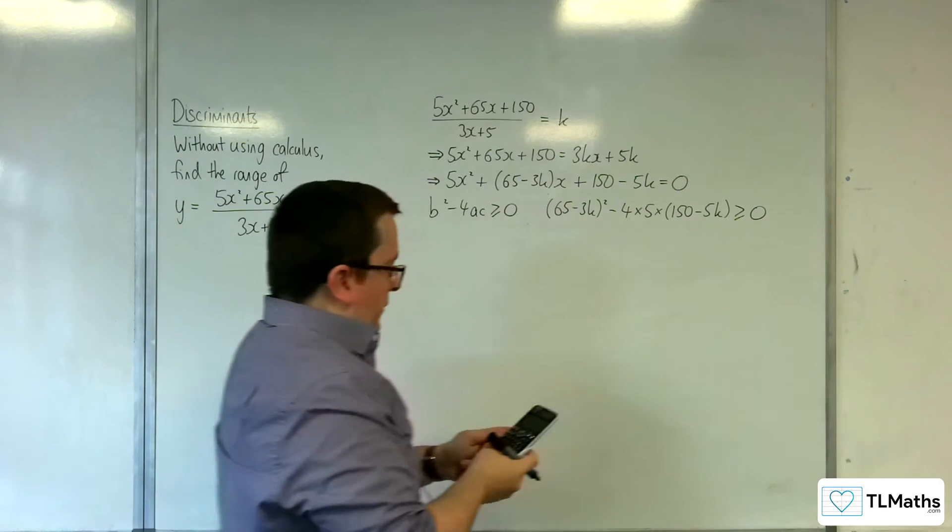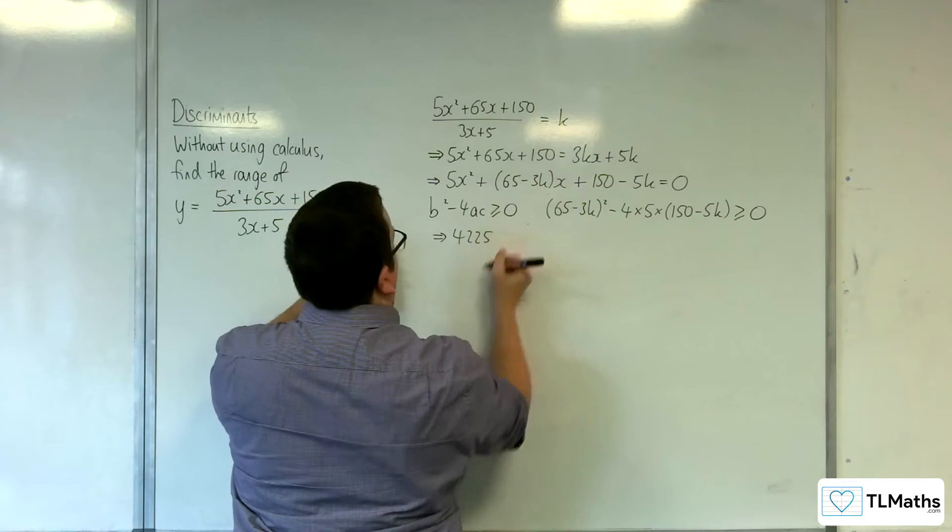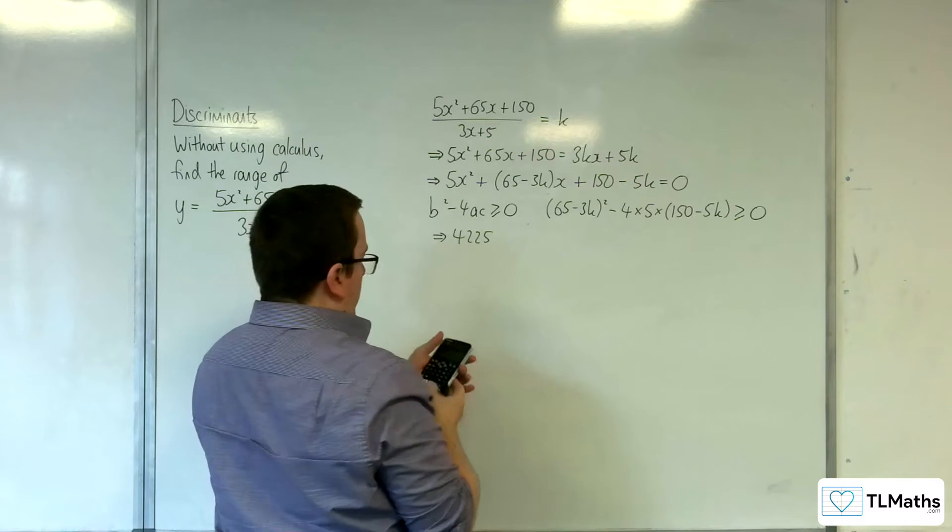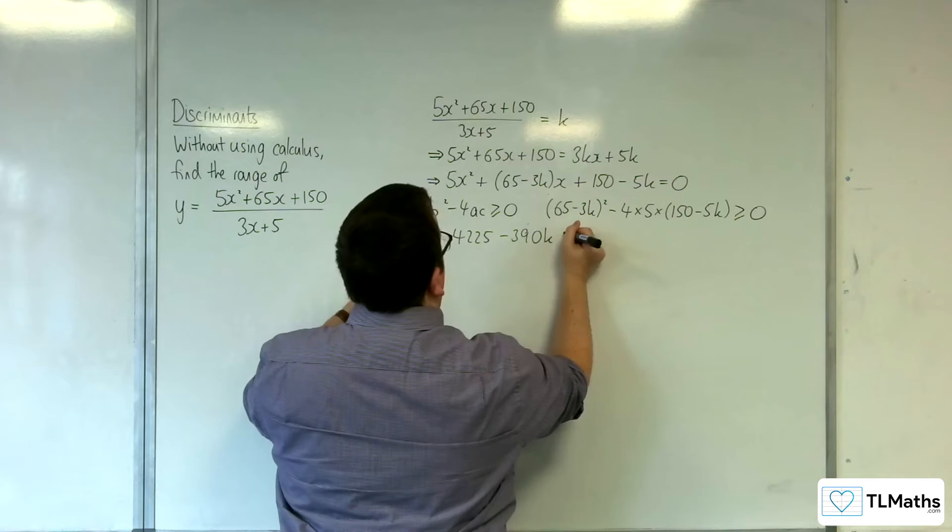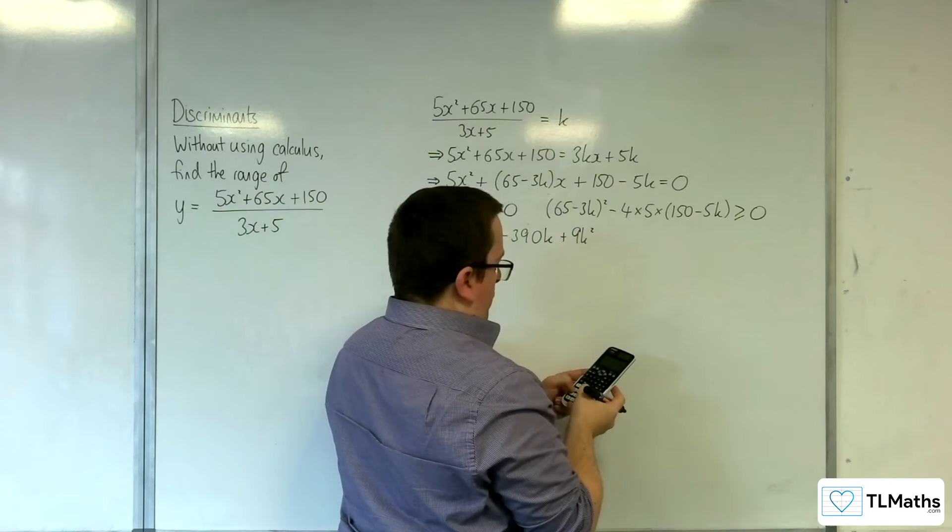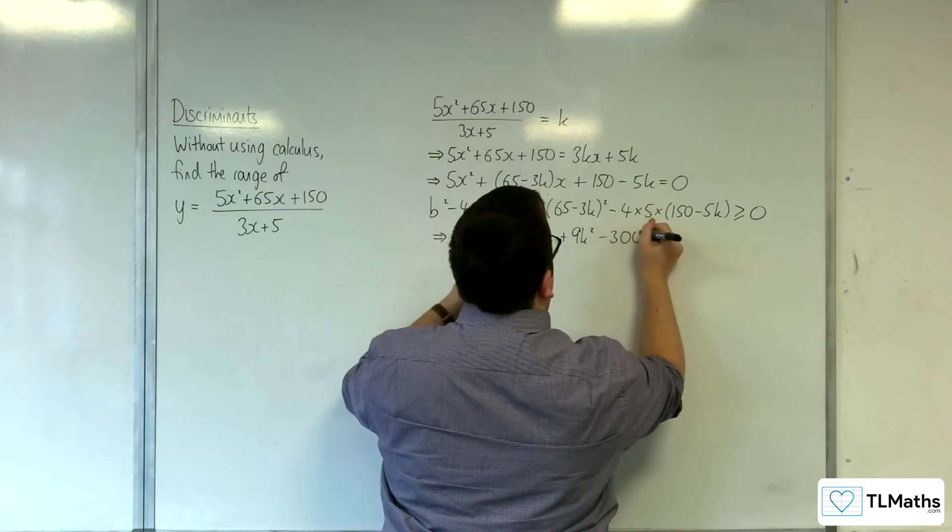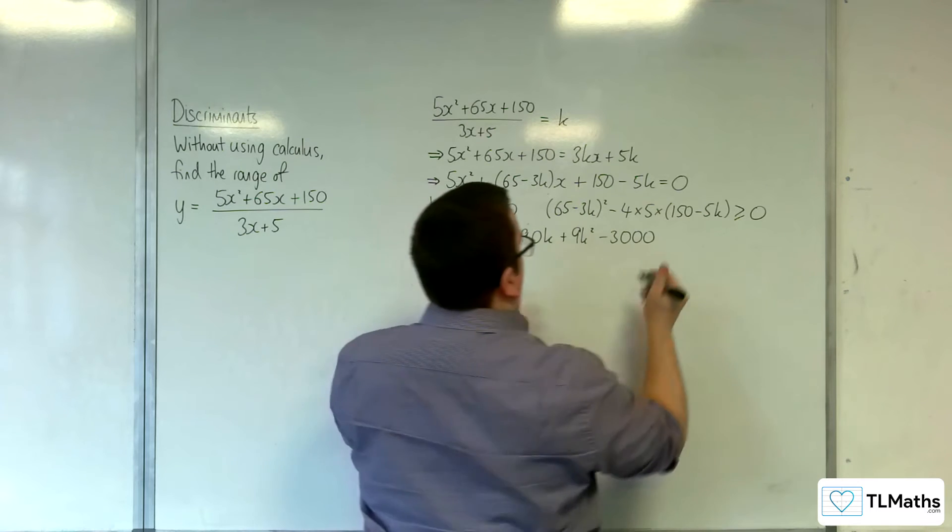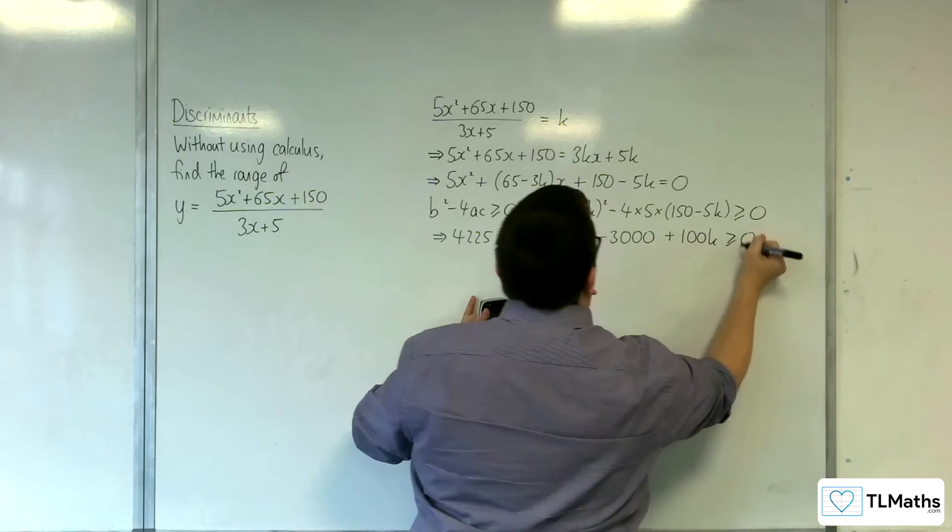Right, so 65 squared is 4,225, then I'm going to have 65 times 3 twice. So take away 390k plus 9k squared, then I've got 4 times 5 times 150, which is, so take away 3,000. And then 4 times 5 times 5 times 5, so plus 100k is greater than or equal to 0.